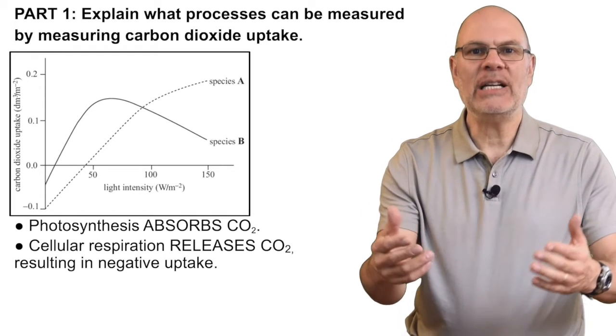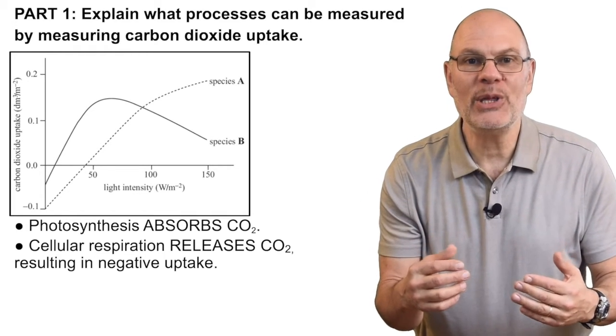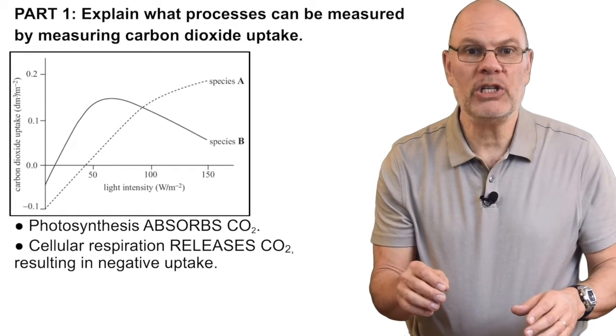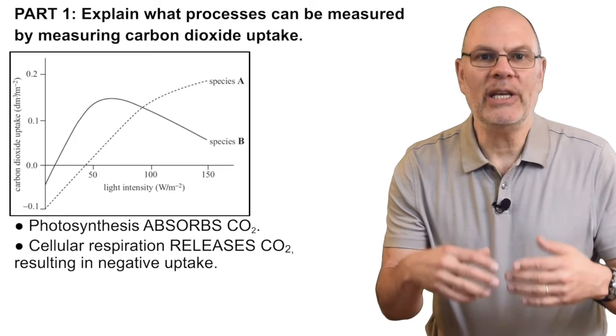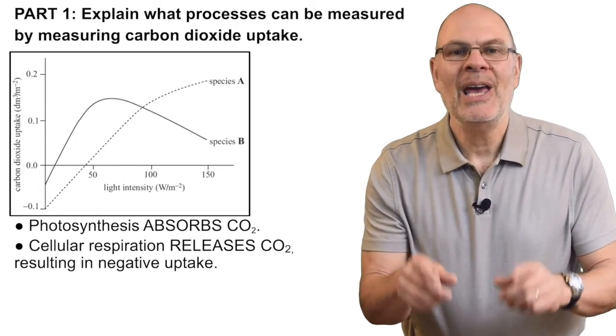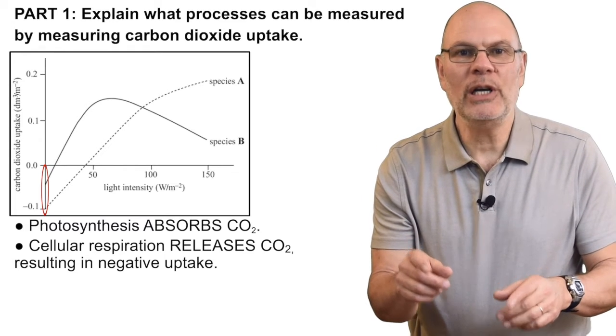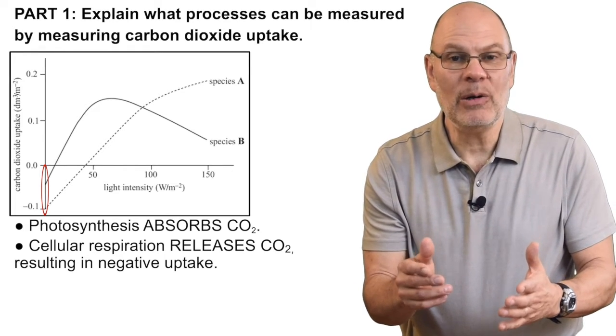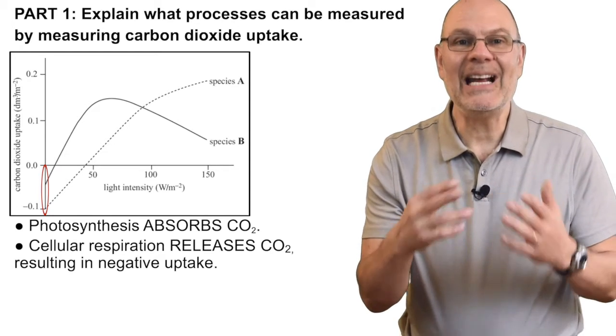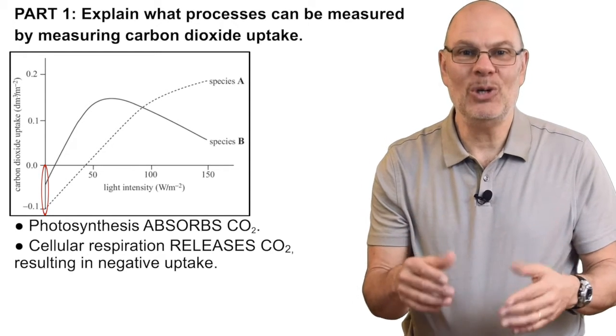In other words, cellular respiration causes negative uptake. Where CO2 is taken up into a plant by photosynthesis, it's released by plants during cellular respiration. Most of the values on this graph show the interaction between respiration and photosynthesis. The exception is this point over here, where light intensity is zero.